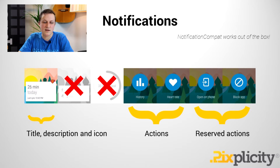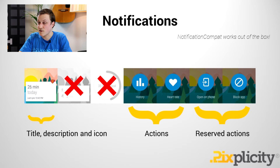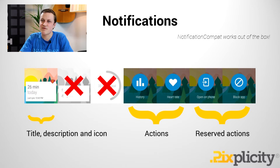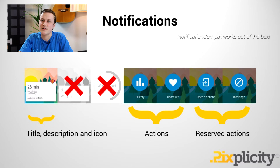Let's take a look at the leftmost notification we have here. The title, description, and icon are already showing on our Android Wear device. So that works straight out of the box — there's no work to be done there. Any actions that you provided into NotificationCompat will appear to the right of that, and you can swipe horizontally to get to them.